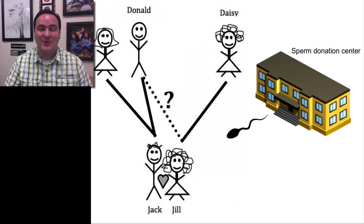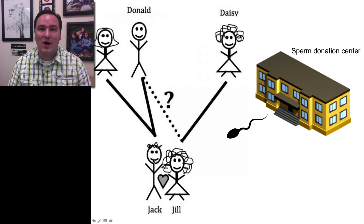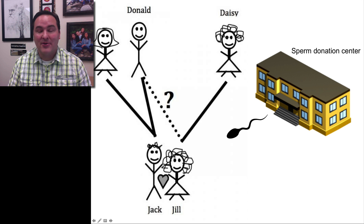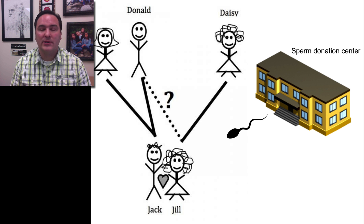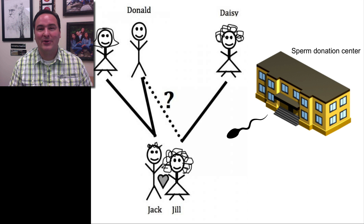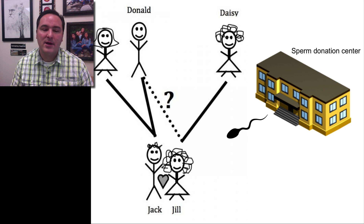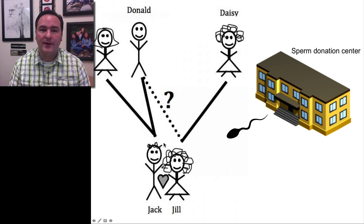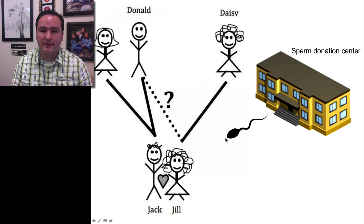So this is the conundrum they're in. Donald and Jack have talked about this, but Jack doesn't want to invade on Jill and Daisy's privacy. So he's not willing to go and say we need to take a paternity test, because to do that you have to give a biological sample somehow. Jack wants to try to figure out if there's a way to rule out that Donald is the father of Jill without doing that.